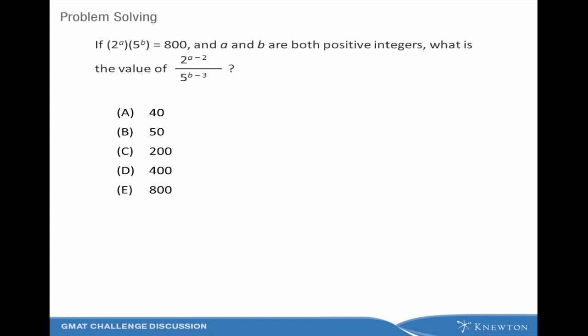So let's see, we've got 2 to the A times 5 to the B equals 800. And that means we're going to have to break down the 800 into its prime factors using a factor tree!